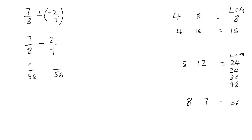Now let's get back to the question. I want my new fraction's denominator to be 56. How do I get from 8 to 56? I multiply 8 by 7, because 8 times 7 is 56. We cannot just multiply the denominator and leave the numerator — we have to balance our fraction. Whatever we do to the denominator, we do to the numerator. So I also multiply the numerator by 7: 7 times 7 is 49, giving me 49/56.